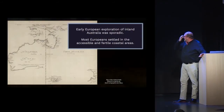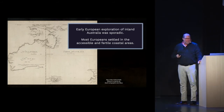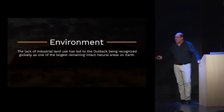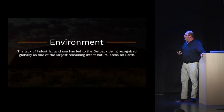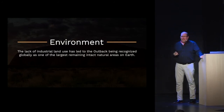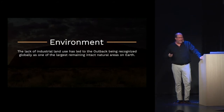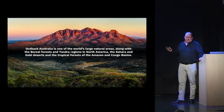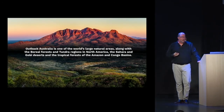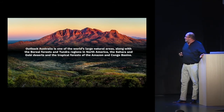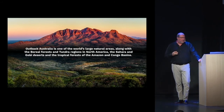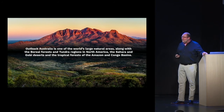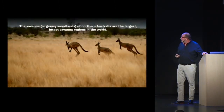Early European exploration of inland Australia was sporadic; most settled in coastal regions. The lack of industrial land use has made the Outback one of the most intact natural areas on earth. Outback Australia is one of the world's largest natural areas, along with the boreal forests and tundra of North America, the Sahara and Gobi Deserts, and the Amazon Rainforest.